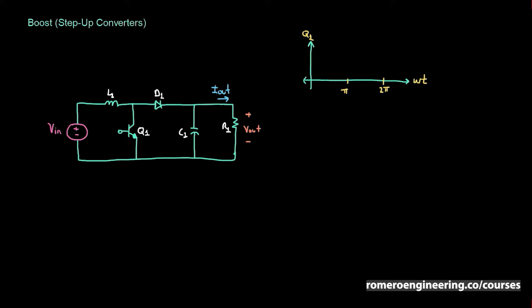The control signal for transistor Q1 would look like this: on from zero to pi, then zero from pi to 2pi. Remember that the duty ratio for the converter is the time during which the transistor is on. So the time from zero to pi equals D times T — the duty ratio times the period — and the full period is from zero to 2pi, so this is T. If Q1 is on from zero to pi and one period is 2pi, then the duty ratio is 0.5 — in other words, Q1 is on for half of the time.